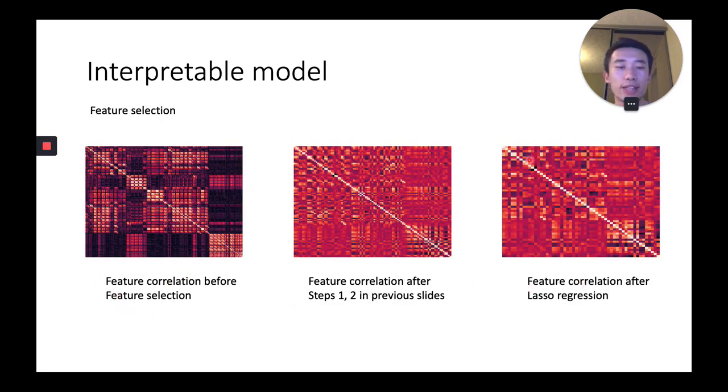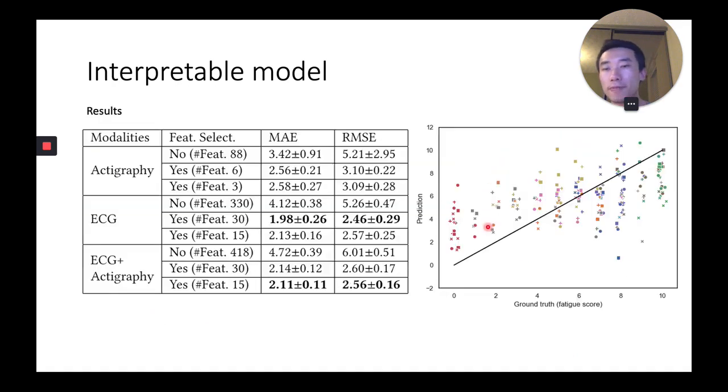After the final step of feature selection, we have less redundancy. As for the results, ECG with 30 selected features achieves the best mean absolute error. Note that using ECG and actigraphy together, we got worse results.